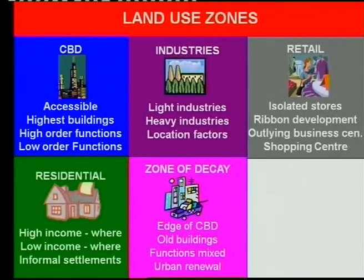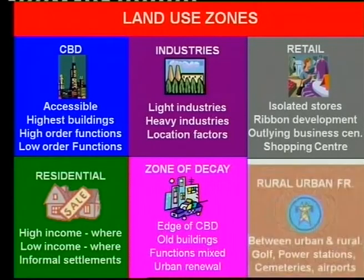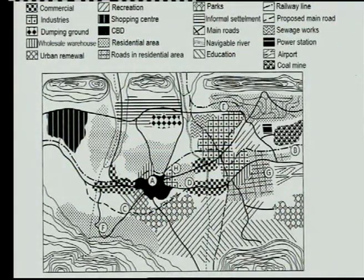Then the zone of decay — this is my favorite zone. It's exciting, everything happens there. If you look at your zone of decay, what's very important is that it's on the edge of the CBD. Old buildings, mixed functions, and urban renewal that you find there. Then the rural-urban fringe — where do you find that? Between urban and rural. What do you get there? You get your golf courses, your power station, cemeteries, and airports that we find there.